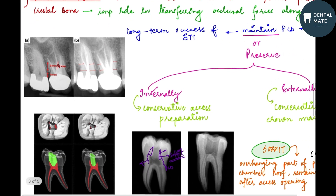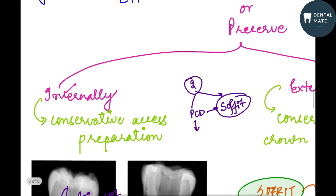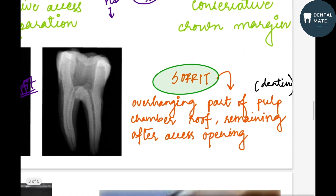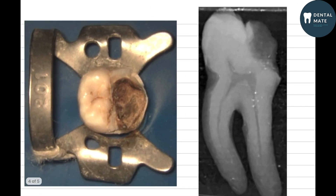In a conservative access cavity preparation, there are two points to consider. First, we have to preserve the pericervical dentine. Second, to preserve the pericervical dentine, we need to preserve the soffit — the overhanging part of the pulp chamber roof which remains after access opening.